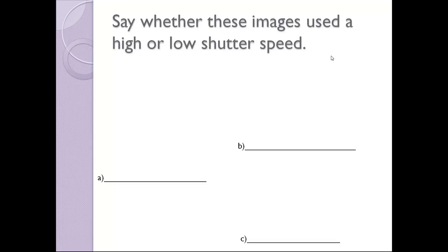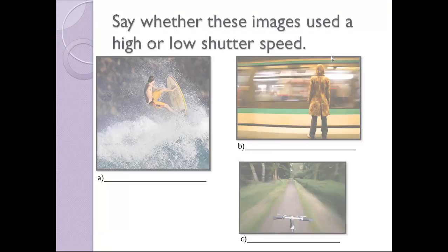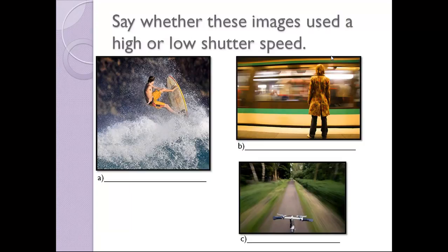Say whether these images use a high or low shutter speed. Example A: fast shutter speed. Example B: slow shutter speed. Example C: slow shutter speed again.